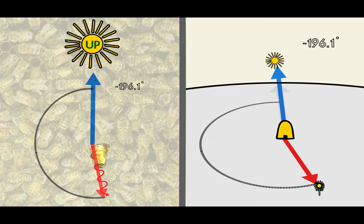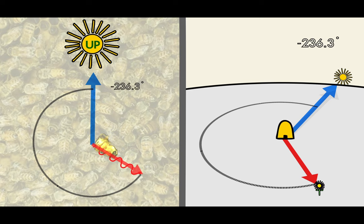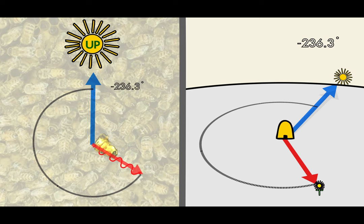As the day goes by, a bee will even use its internal clock to adjust for the movement of the sun in the sky. This lets fellow workers always know the correct direction to travel in order to find food.